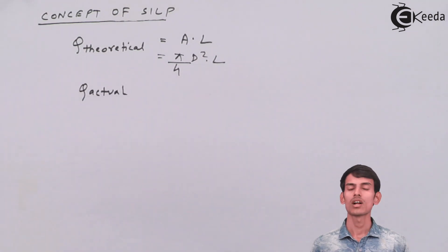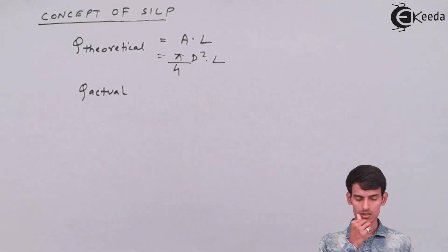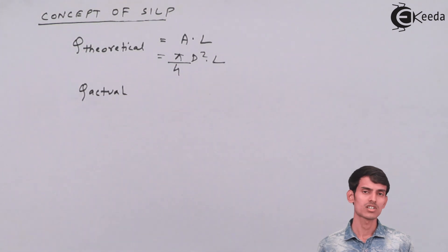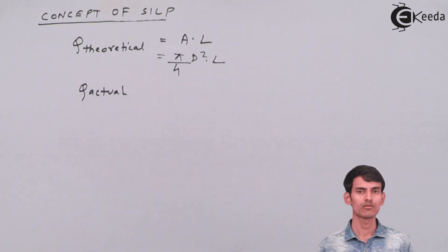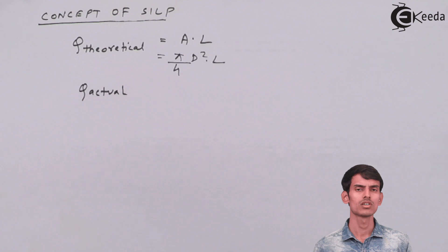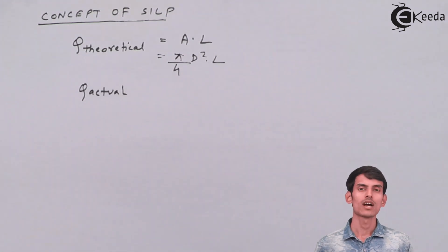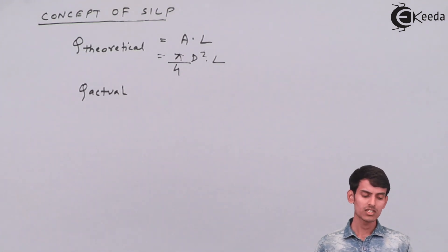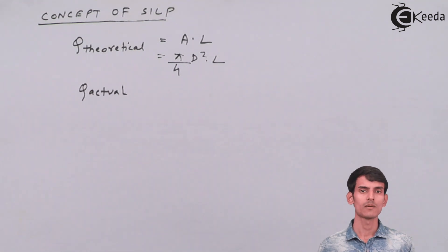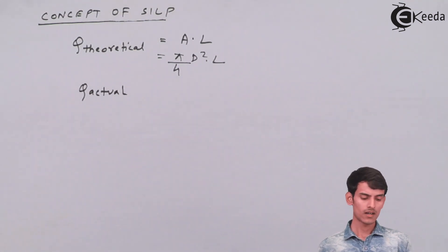The actual discharge Q_actual can only be known through physical measurement. Once suction and discharge take place, you collect and measure the volume of water — that gives you the actual discharge. The difference between theoretical discharge and actual discharge is nothing but slip.